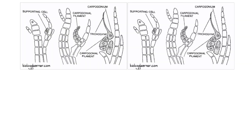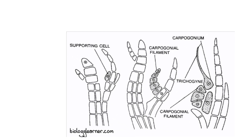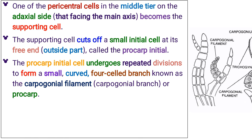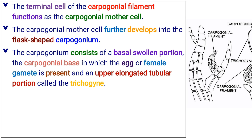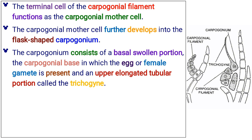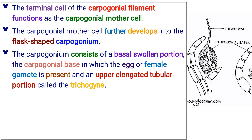The supporting cell cuts off a small initial cell at its free end, called the procarp initial. The procarp initial cell undergoes repeated divisions to form a small, curved, four-celled branch known as the carpogonial filament, or procarp. The terminal cell of the carpogonial filament functions as the carpogonial mother cell. The carpogonial mother cell further develops into the flask-shaped carpogonium. The carpogonium consists of a basal swollen portion, the carpogonial base, in which the egg or female gamete is present, and an upper elongated tubular portion called the trichogyne.